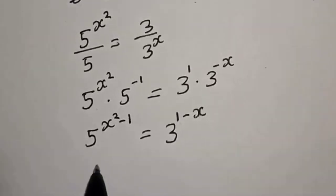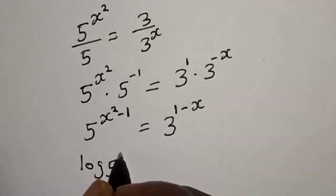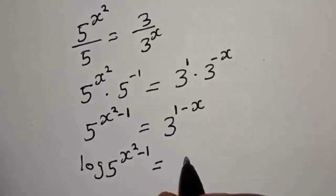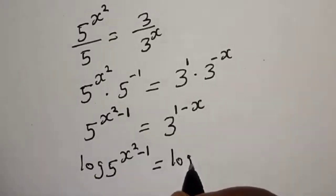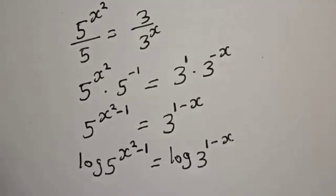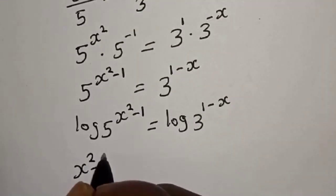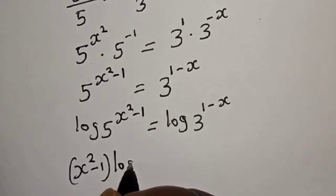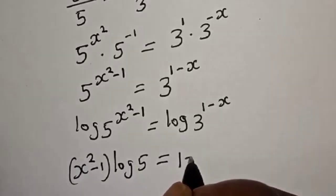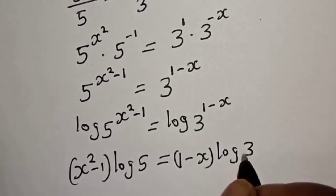Now let's take the log of both sides. We have log of 5 raised to power (s squared minus 1) equals log of 3 raised to power (1 minus s). This gives us (s squared minus 1) log 5 is equal to (1 minus s) log 3.